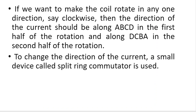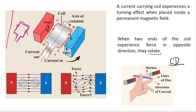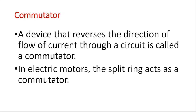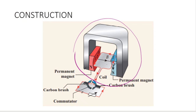If we want to make the coil rotate in one direction, the current direction should change. The current should flow along A, B, C, D in the first half of rotation and along D, C, B, A in the second half of rotation. For continuous rotation, the current direction changes over each half rotation. A device that reverses the direction of flow of current through a circuit is called a commutator. In an electric motor, the split rings act as the commutator.